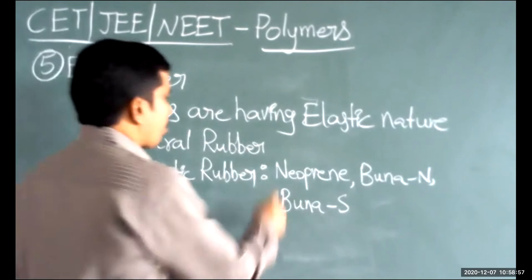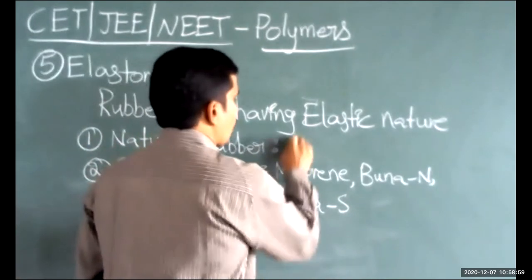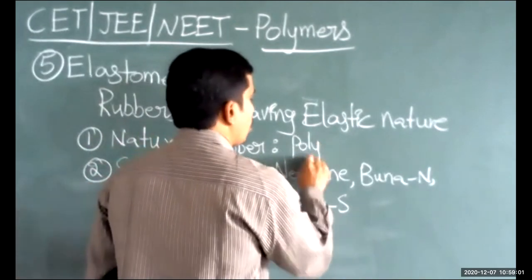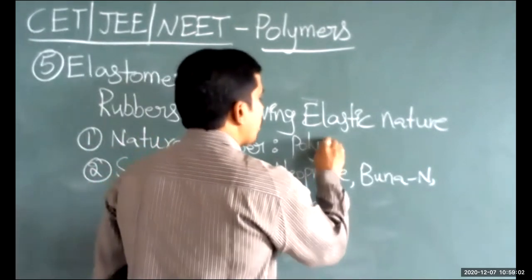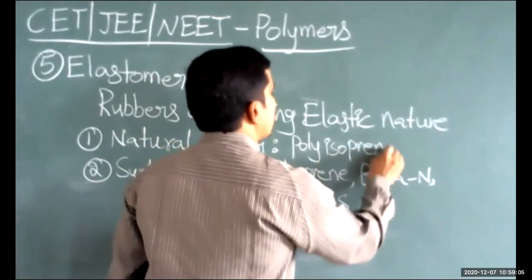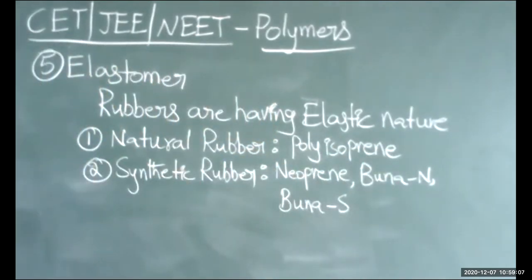Natural rubber is polyisoprene. All of these — neoprene, buna-N, buna-S, and polyisoprene — are examples of elastomers because they have elastic nature.